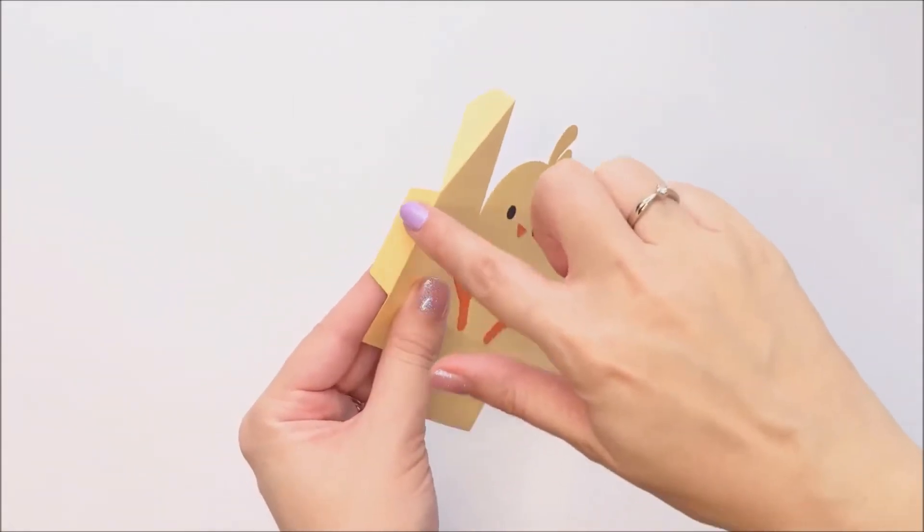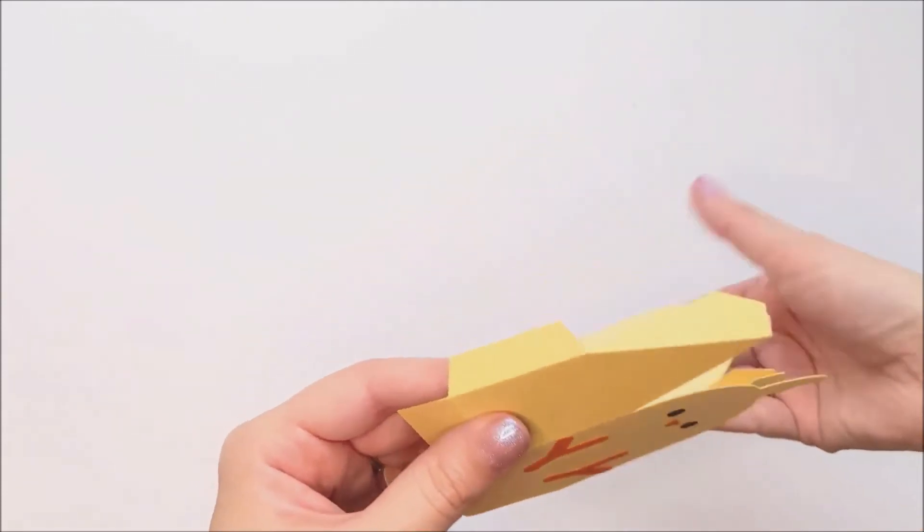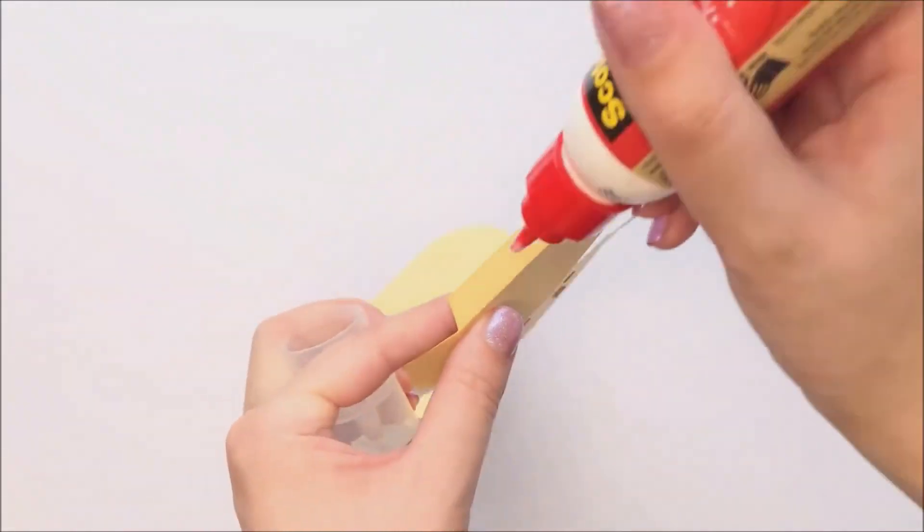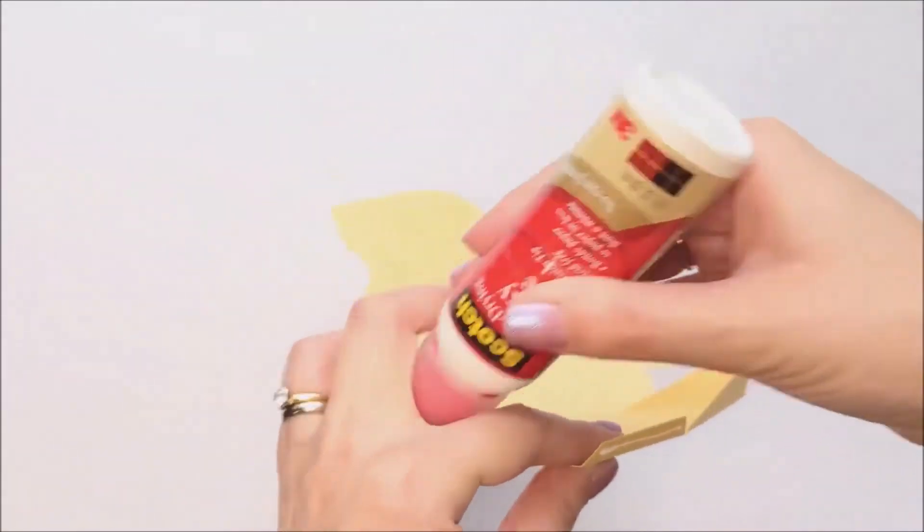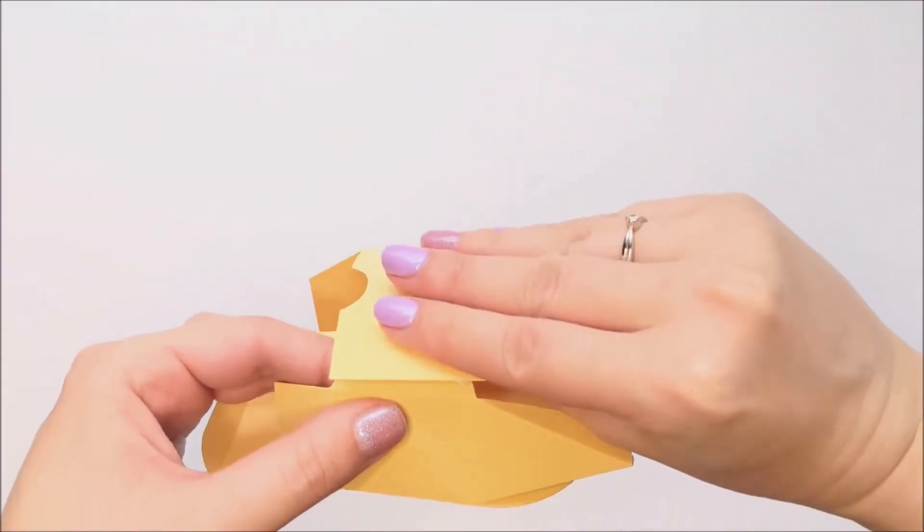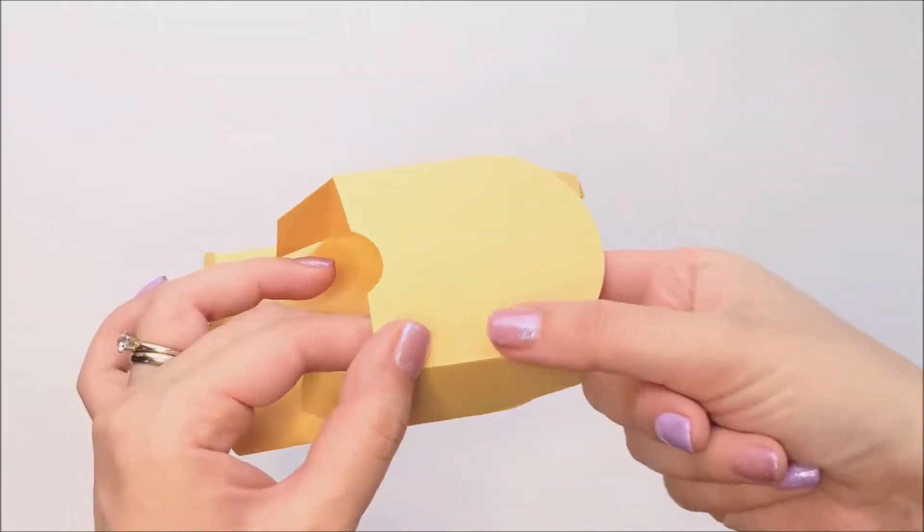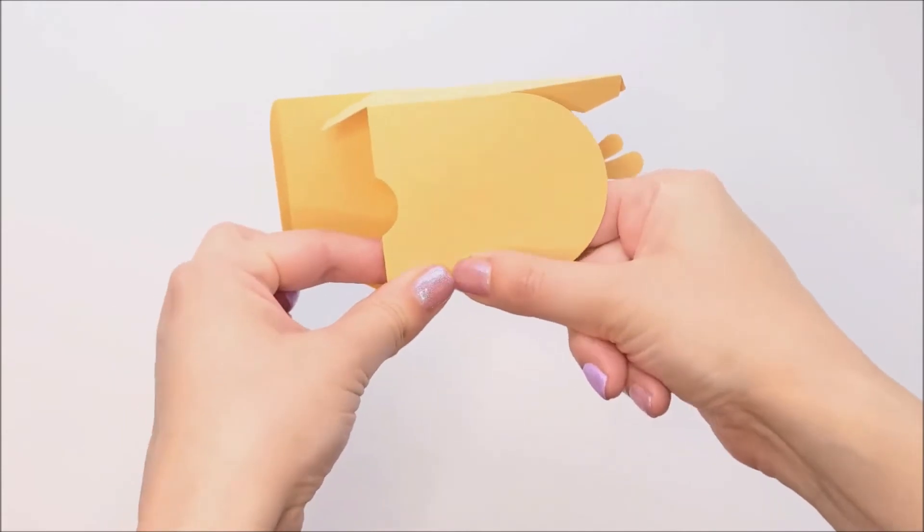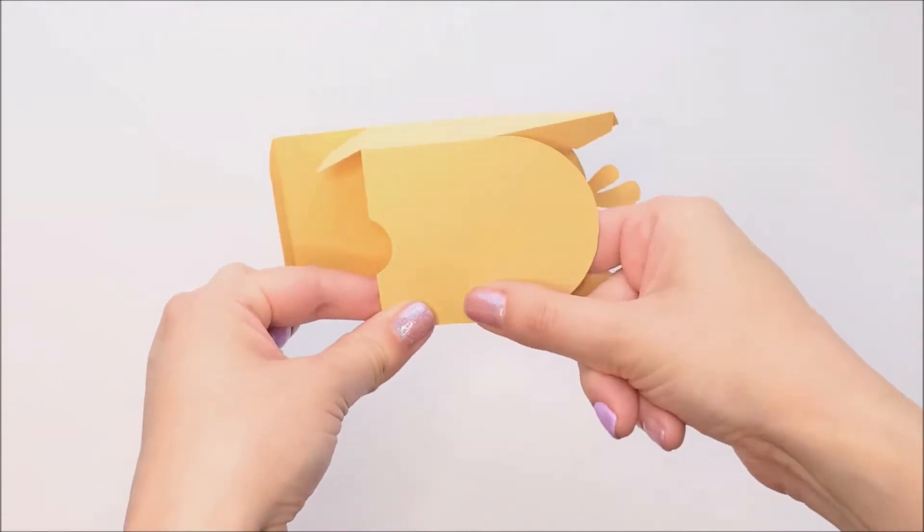Next you're going to place glue on this side tab here and then you're going to bring your box around to form your box shape. I'm just going to hold that in place for a couple seconds until the glue is set.